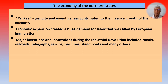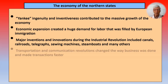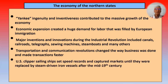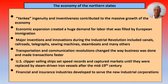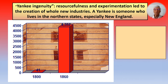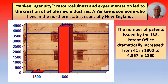Major inventions and innovations during the Industrial Revolution included canals, railroads, telegraphs, sewing machines, steamboats, and many others. Transportation and communication revolutions changed the way business was done and made transactions faster. U.S. clipper ships sailing around the world set speed records and captured markets until they were replaced by steam-driven iron vessels in the mid-19th century. Financial and insurance industries developed to serve the new industrial corporations, and American exports climbed as demand for U.S. raw materials increased overseas. Yankee ingenuity, resourcefulness, and experimentation led to the creation of whole new industries. A Yankee, by the way, is someone who lives in the Northern states, especially in New England.